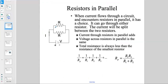Now resistors in parallel — the second configuration. In parallel, one resistor is on the top branch and another on the bottom branch. When current flows through the circuit and encounters resistors in parallel, it has a choice: it can go up or go down. A portion of the current goes to the top resistor and a portion to the bottom. If the two resistors are identical, half the current goes up and half goes down. If they're not identical, the split is uneven depending on the resistance values.